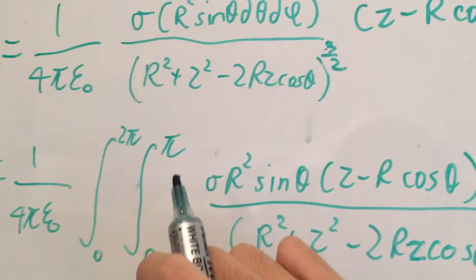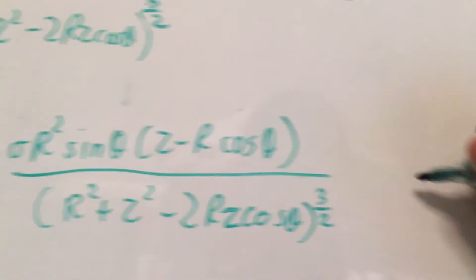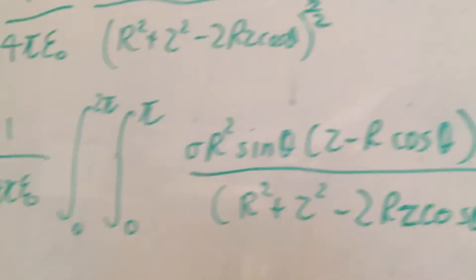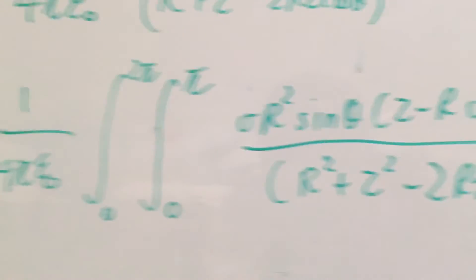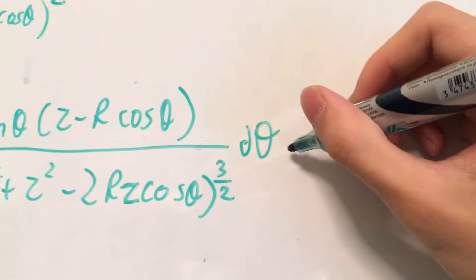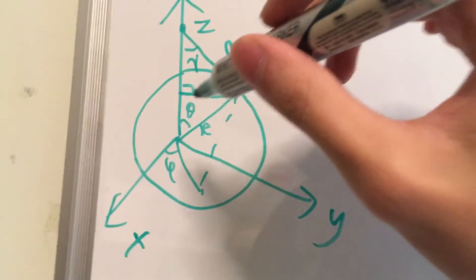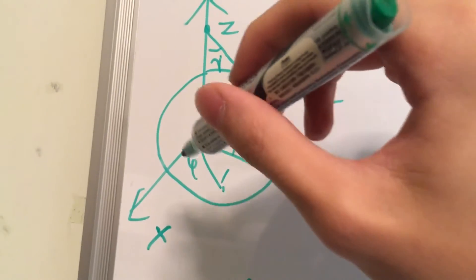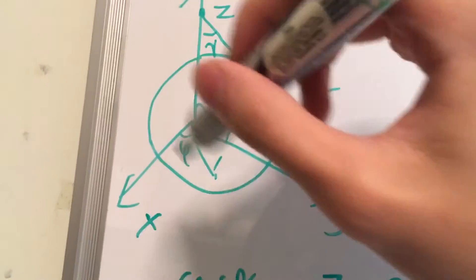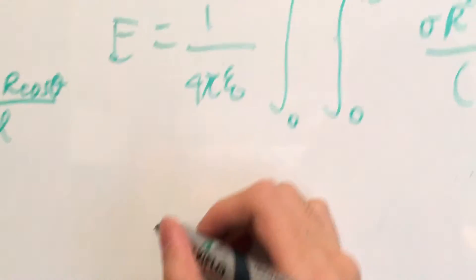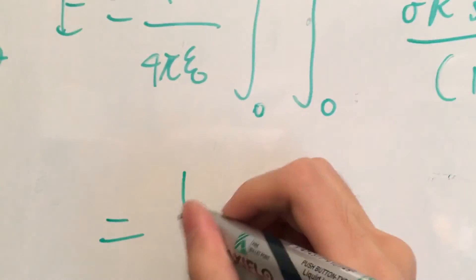And this integral from 0 to pi is for d theta, and the one from 0 to 2 pi is for d phi. And as you can see, if you integrate this for theta from 0 to pi, and for phi from 0 to 2 pi, you would draw out the entire sphere. So that's the range for those two variables.